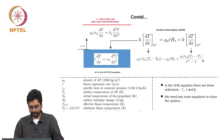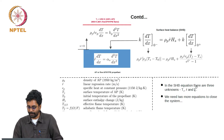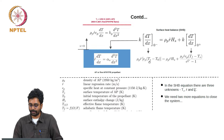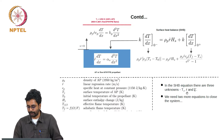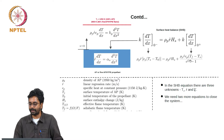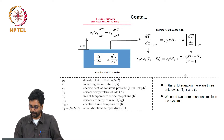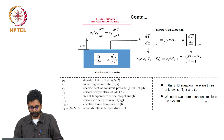Now we have one equation, and in the surface heat balance equation there are three unknowns. The surface temperature is unknown, the burn rate is unknown, and the other thing that is not known is the flame standoff distance. So we need two more equations to close the system.